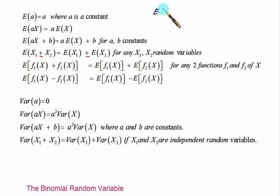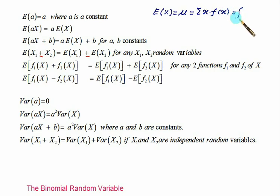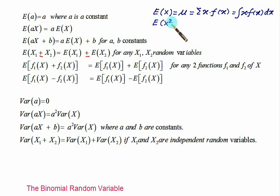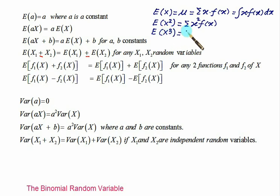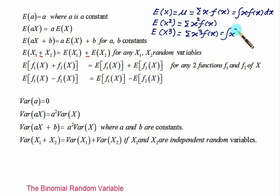For example, the expectation of x, which equals mu, is written as the sum of x·f(x) for discrete variables, or as the integral of x·f(x)dx for continuous variables. Similarly, E(x²) is the sum of x²·f(x), and E(x³) is the sum of x³·f(x) for discrete, or the integral of x³·f(x)dx for continuous random variables.